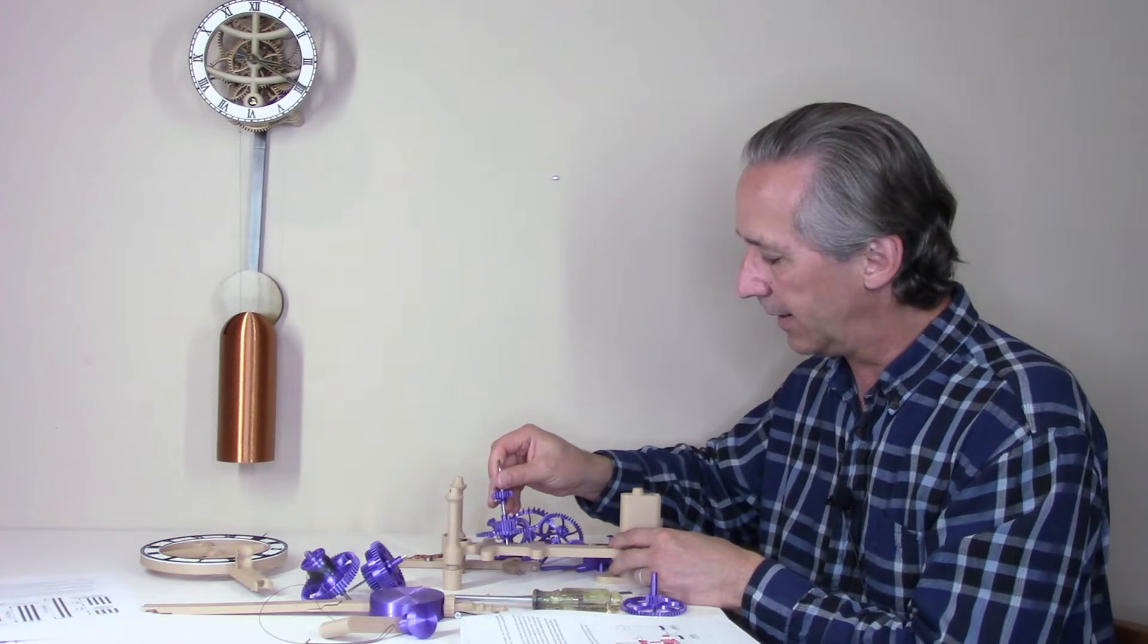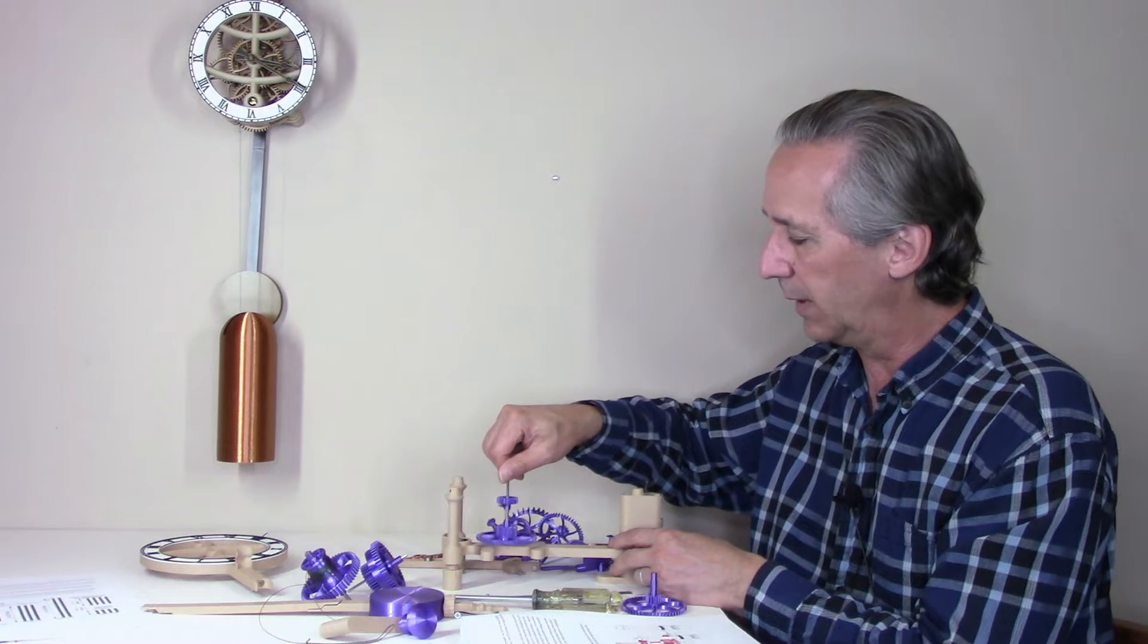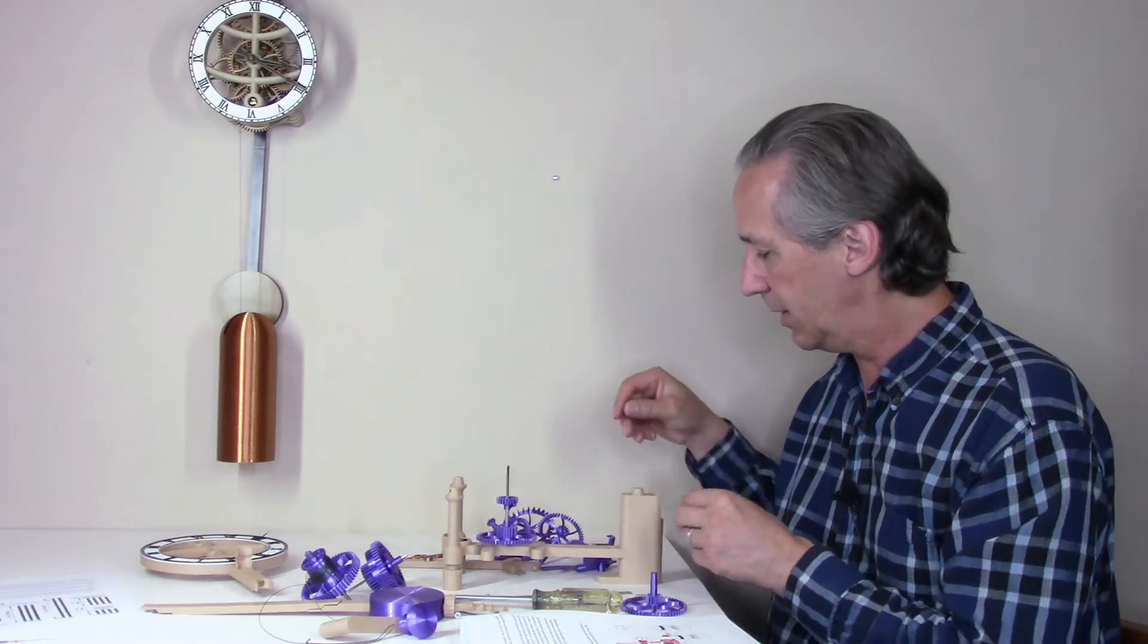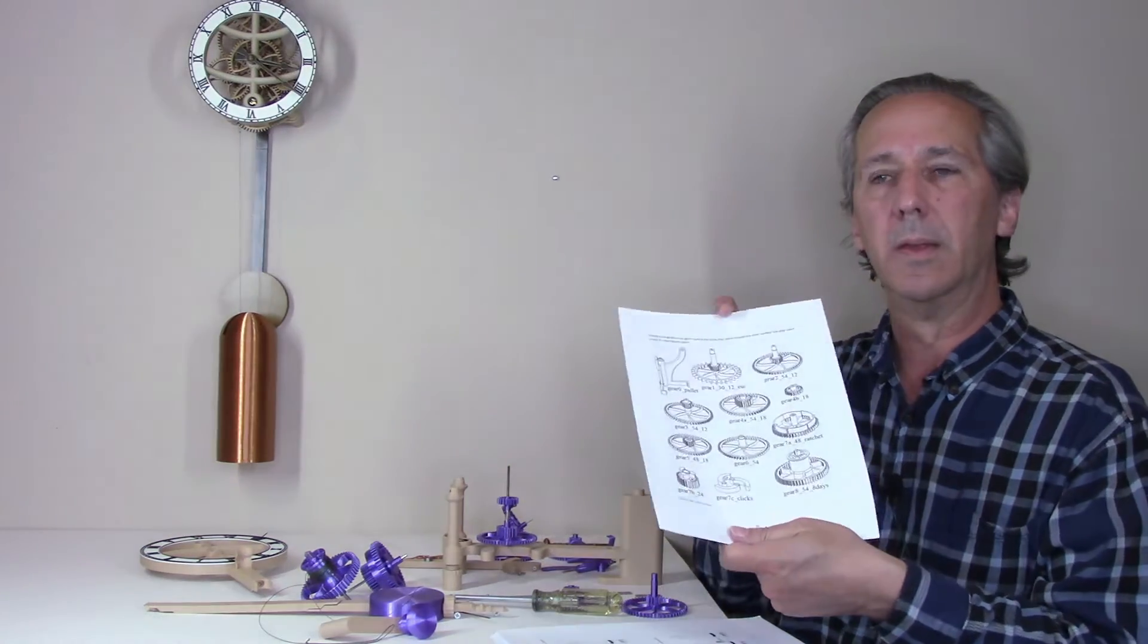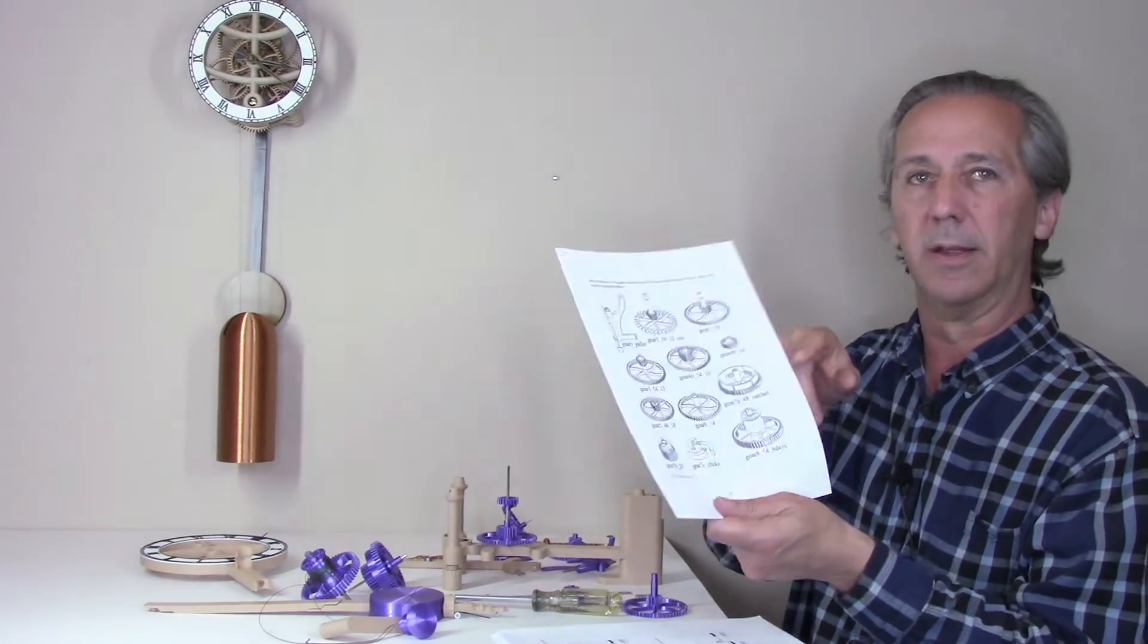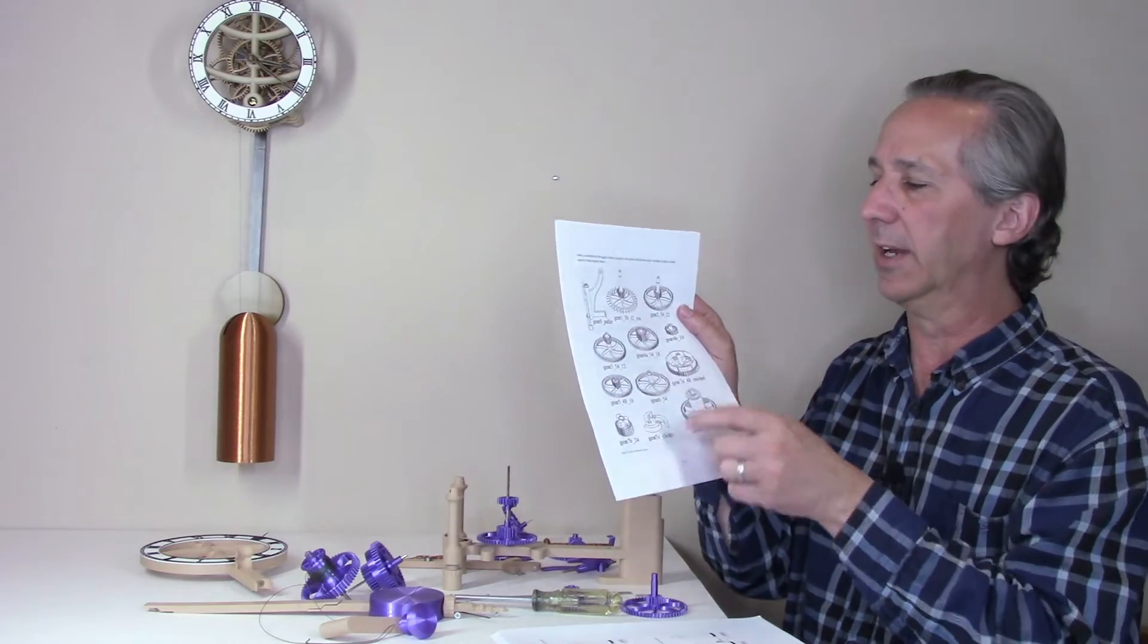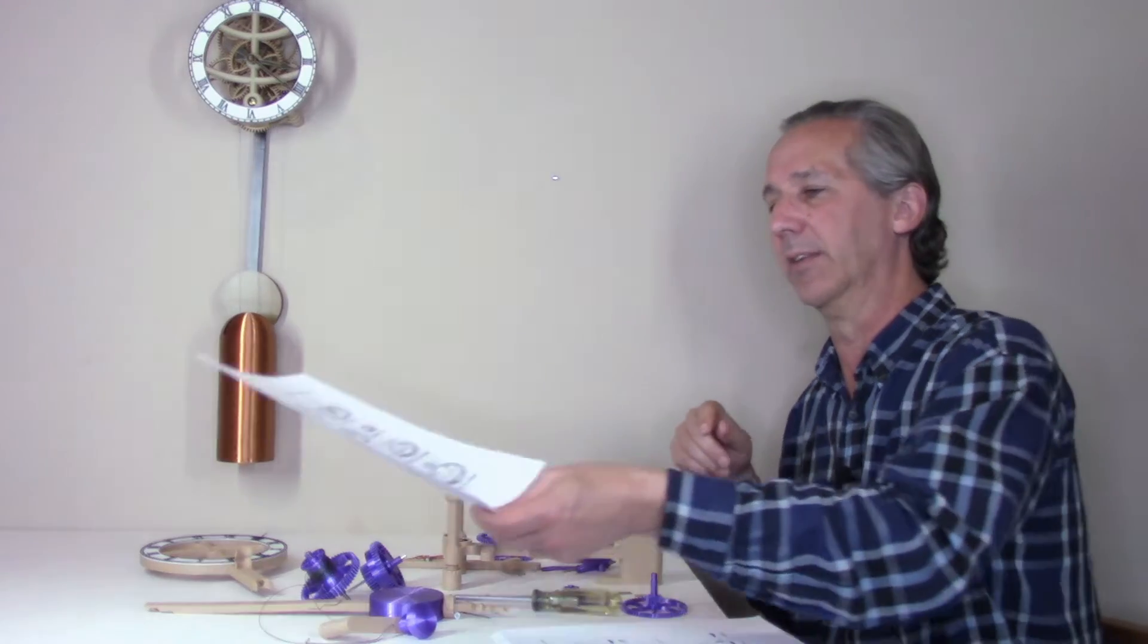The gears get added into the clock by adding the previously completed minute hand arbor into the central location. Assembly is simplified by printing out the diagram on page 15 showing the various gears, and that helps identify them as they're described in the assembly guide.